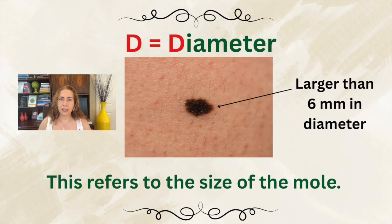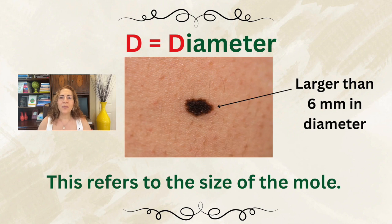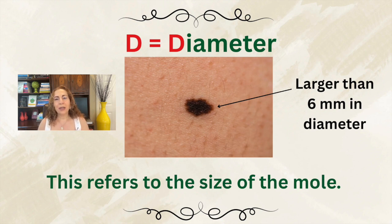Then we have D, which stands for diameter larger than 6 mm. While benign moles are usually small, a warning sign for melanoma is a diameter larger than 6 mm — about the size of a pencil eraser. But here's something important: melanomas can be smaller than 6 mm, especially in early stages. The smallest melanoma I diagnosed at my clinic was 1 mm — literally a dot.